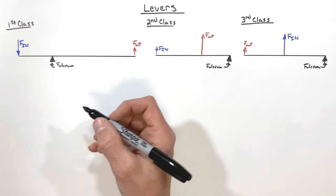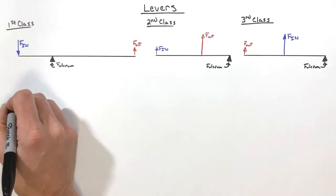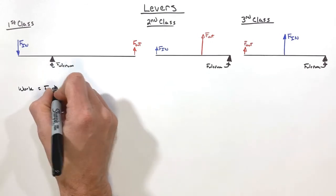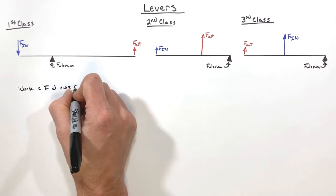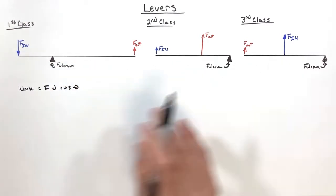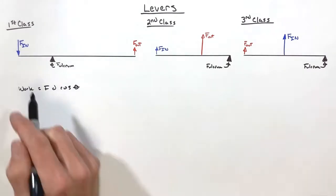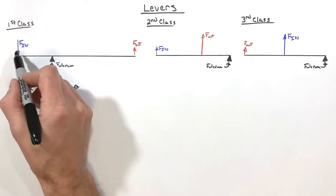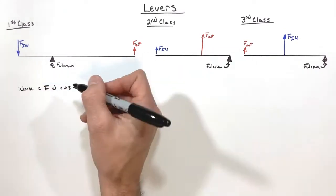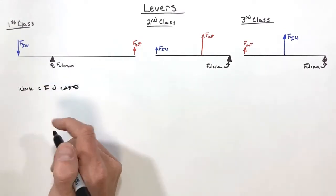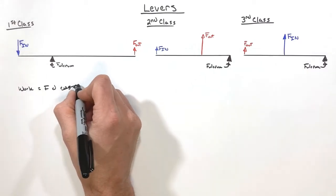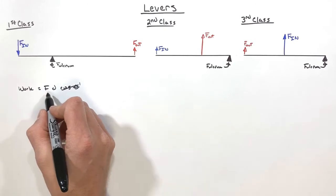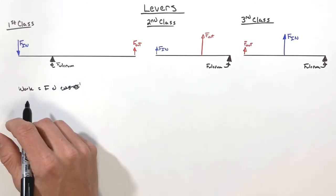So to get how levers work, I want to back up and start taking a look at work again. Now you remember work is force times displacement times the cosine of the angle between these. Now in all three of these cases, the force both input and outputs are perpendicular to the levers themselves, and so ultimately what that does is that turns this cosine theta term into one always. So really we're talking about work as simply being force times displacement.